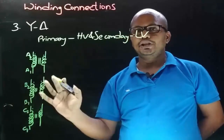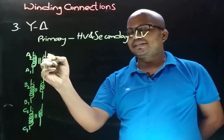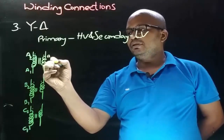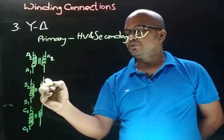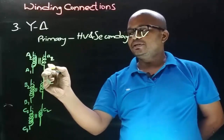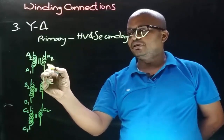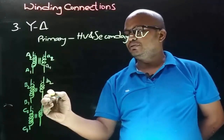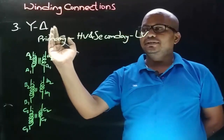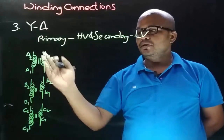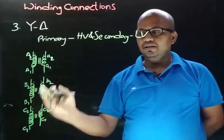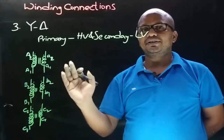Here A2, B2, C2 are considered as dotted terminals. On the secondary side, dotted terminals are small a2, small b2, small c2, and non-dotted terminals on the secondary side are small a1, small b1, and small c1. As we are considering the star-delta connection, on the primary side the windings are connected in star and on the secondary side windings are connected in delta.